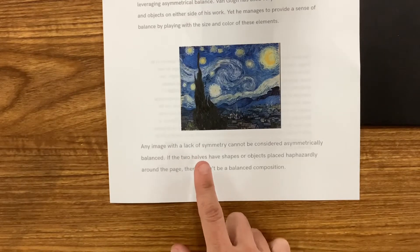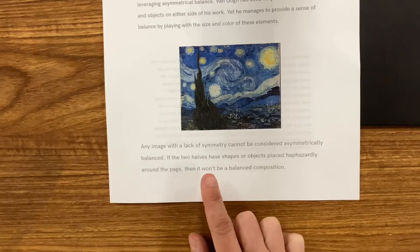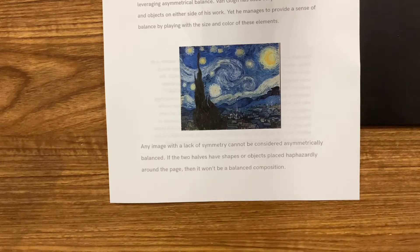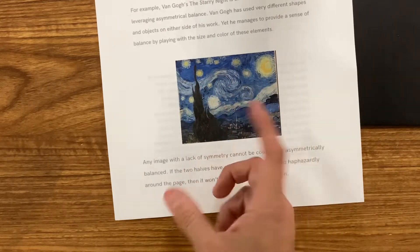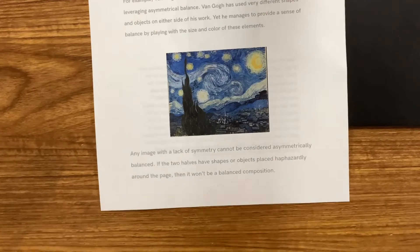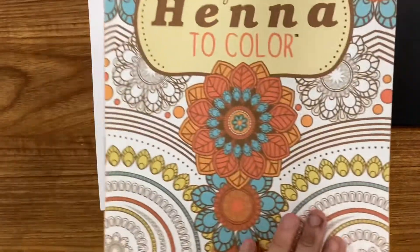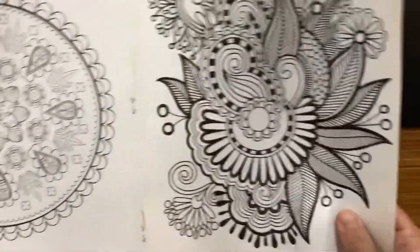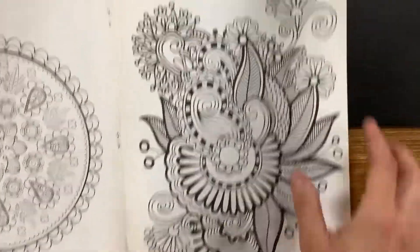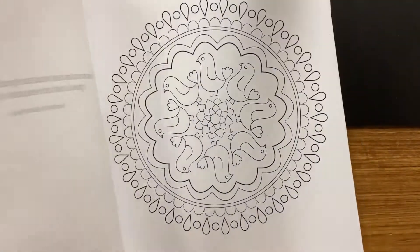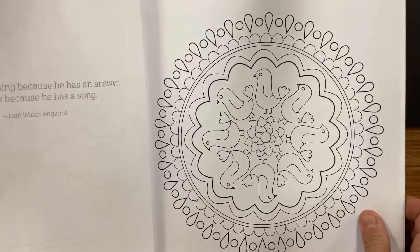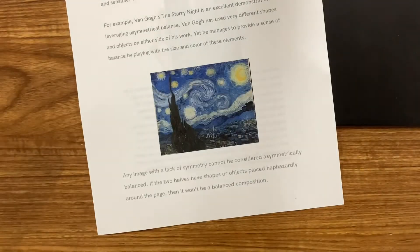Any image with a lack of symmetry cannot be considered asymmetrically balanced if the two halves have shapes or objects placed haphazardly — just randomly around the page. It won't be a balanced composition; it has to have something of equal weight on the other side. We're going to use this henna coloring book with photocopies of asymmetrical and symmetrical examples, combined with mandalas that are mostly radial symmetry, and you'll be cutting these photocopies.